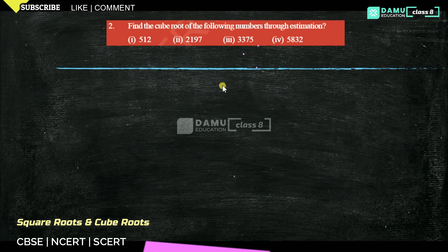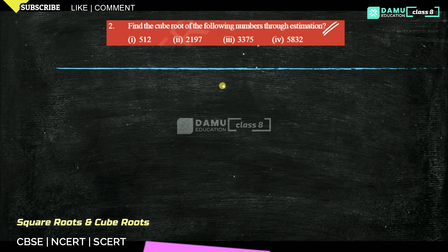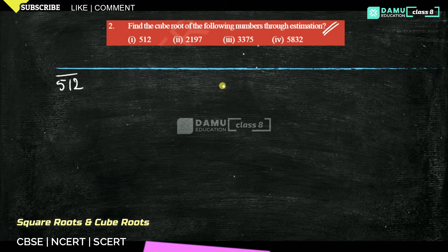In this module, we are going to discuss finding the cube root of numbers through the estimation method. By estimation, we are not going to calculate with exact values — we are going to take approximate values. Let's take 512. For a given number, we divide it into groups of 3 digits.